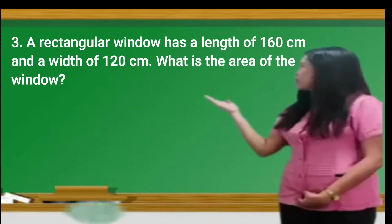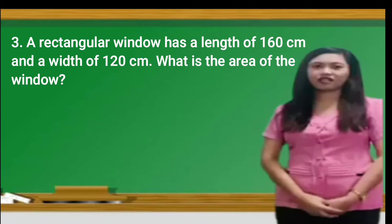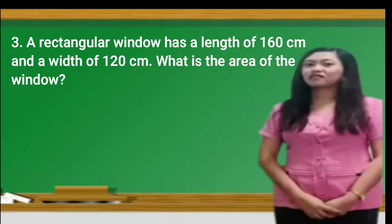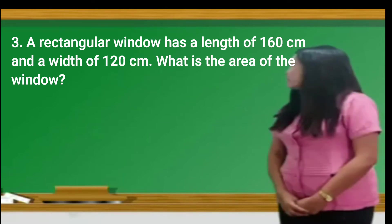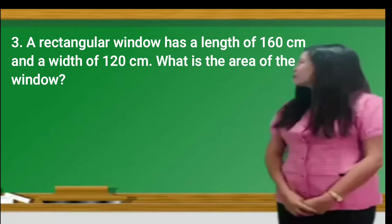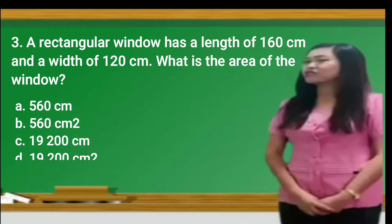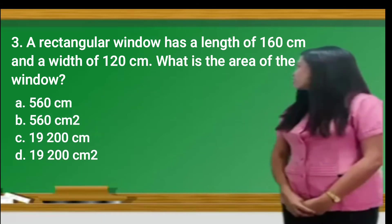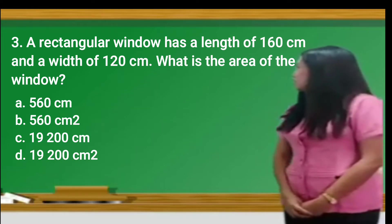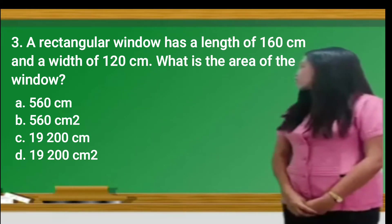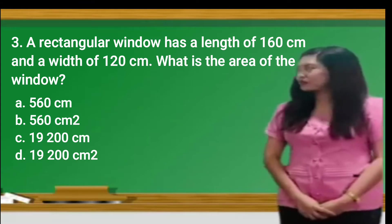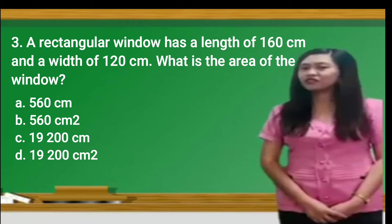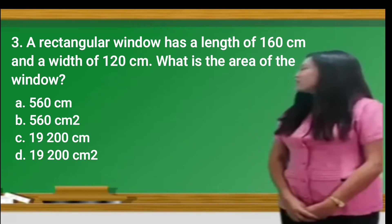Number 3: A rectangular window has a length of 160 centimeters and a width of 120 centimeters. What is the area of the window? A. 560 centimeters. B. 560 square centimeters. C. 19,200 centimeters. Or D. 19,200 square centimeters.